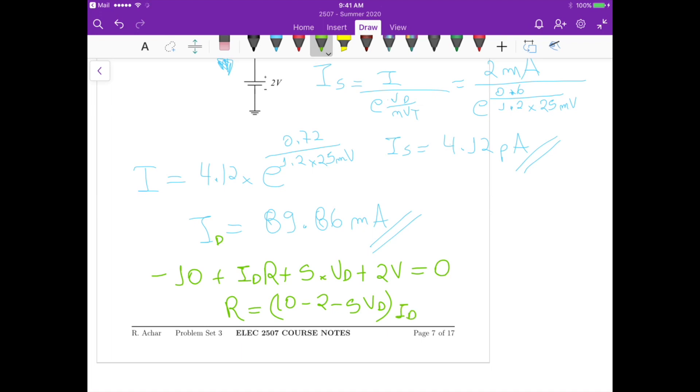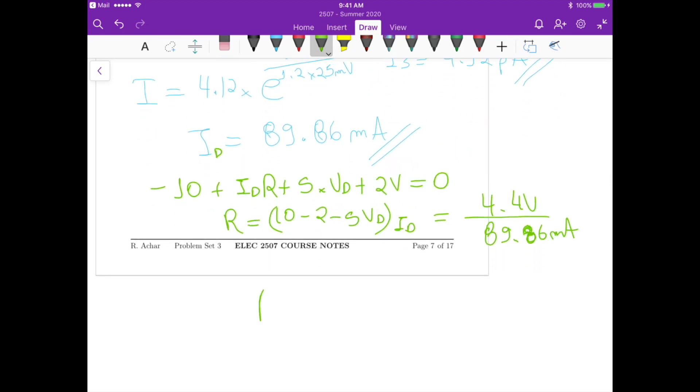If we substitute the values of Vd as 0.72 and the current ID as 89.86 milliampere, this gives us 4.4 volts divided by 89.86 milliampere. This corresponds to a resistance of around 4.29 ohms. That's it for this problem.